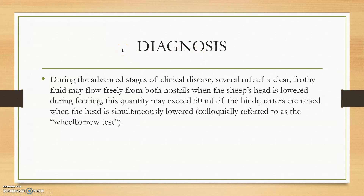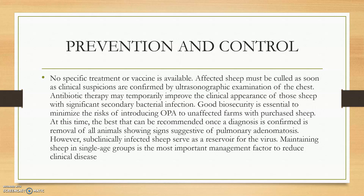Moving to the wheelbarrow test: if you lower the head of a sheep and the head is kept lowered, you will get frothy nasal discharge. A minimum of 50 ml must be obtained — that is the required quantity — for it to be proven as pulmonary adenocarcinoma disease. Prevention and control is achieved through biosecurity measures, proper cleaning and sanitary measures, and separating aged animals from young stock, which must be conducted regularly.